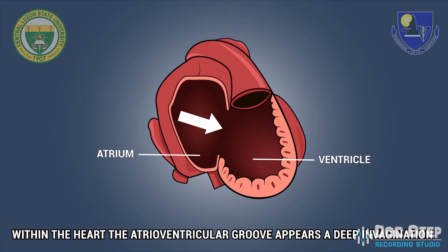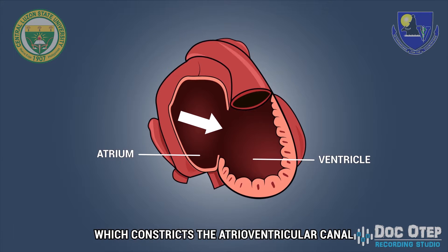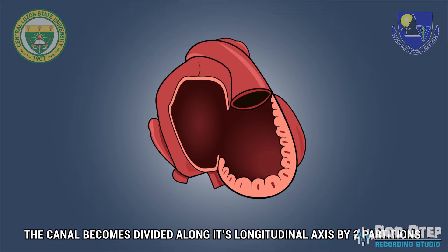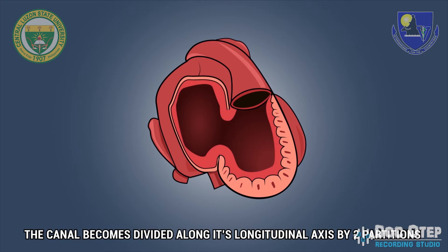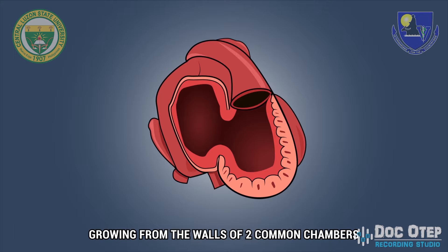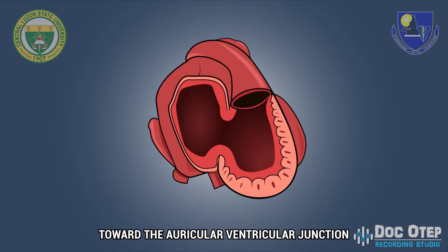Within the heart, the atrioventricular groove appears as a deep invagination which constricts the atrioventricular canal. The canal becomes divided along its longitudinal axis by two partitions, growing from the walls of the two common chambers toward the auricular-ventricular junction.